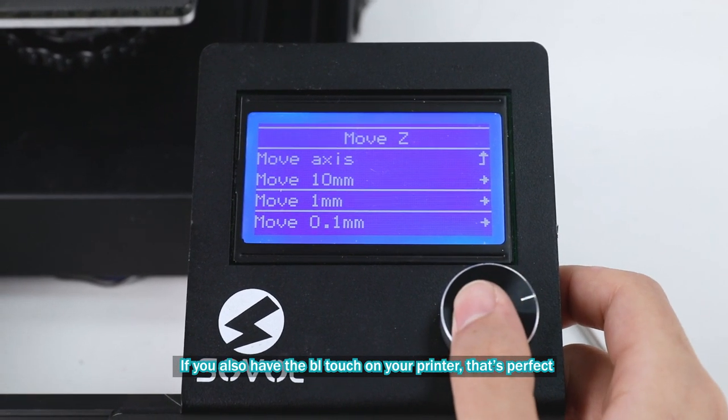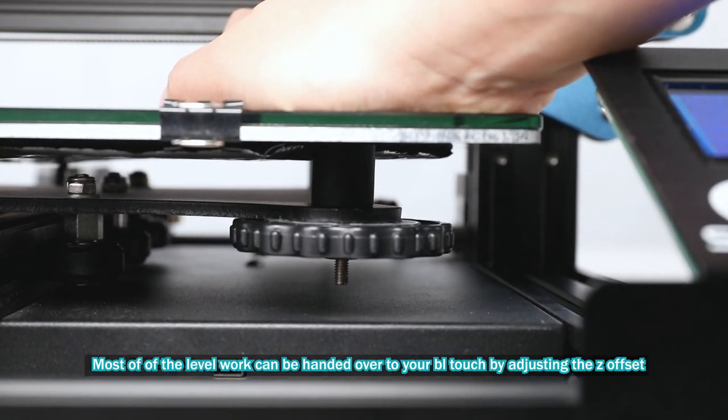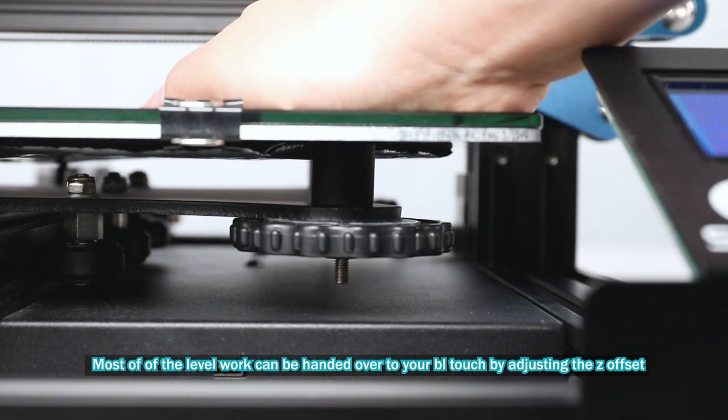If you also have the BLTouch on your printer, that's perfect. Most of the leveling work can be handed over to your BLTouch by adjusting the Z-Offset.